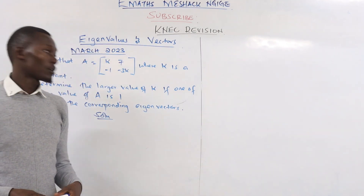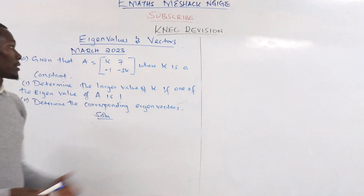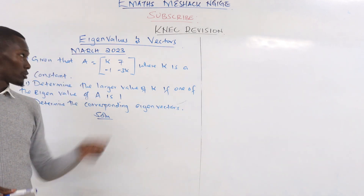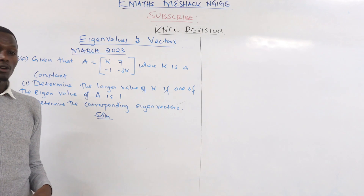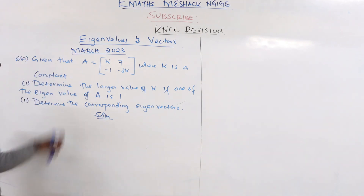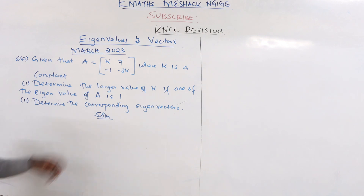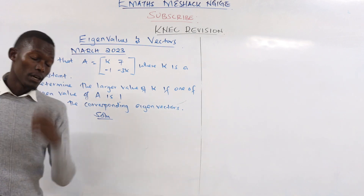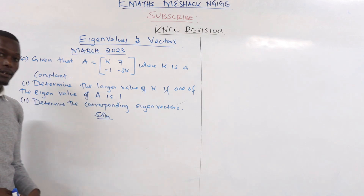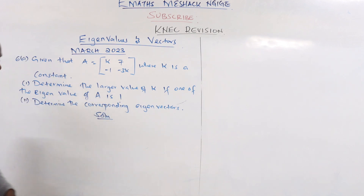We now take another question from the March 2023 series — the previous question was from October/November 2022, sorry for that. Here we are given matrix A with entries k, 7, negative 1, and negative 3k, where k is a constant. We need to determine the larger value of k, given that one eigenvalue of A is 1.